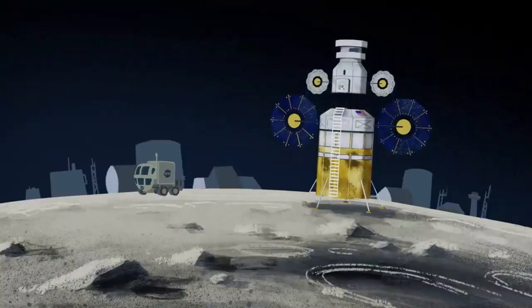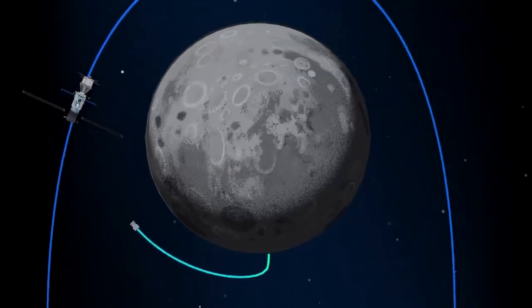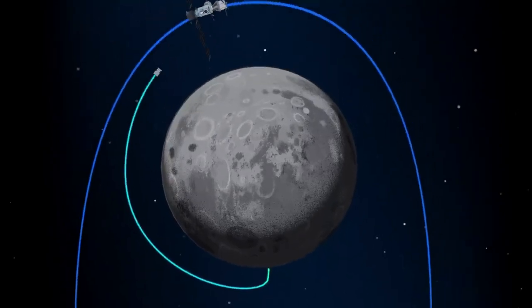Capstone will orbit this area around the moon for at least six months to understand the characteristics of the orbit. Specifically, it will validate the power and propulsion requirements for maintaining its orbit as predicted by NASA's models, reducing logistical uncertainties.